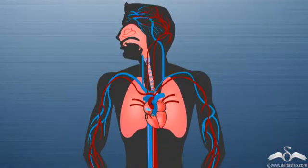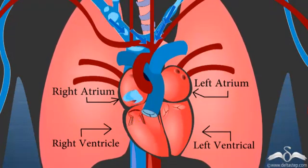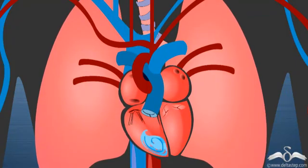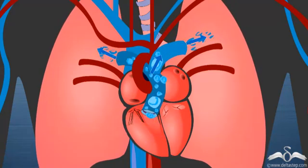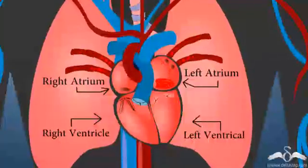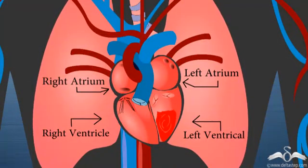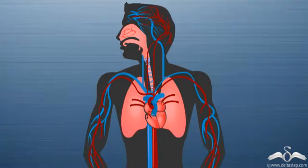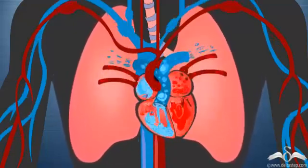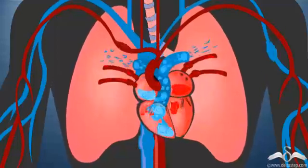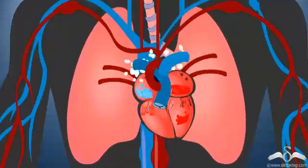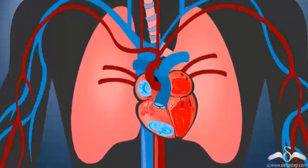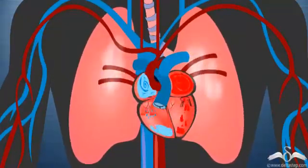Deoxygenated blood comes from the body into the right atrium and from there moves into the right ventricle. From the right ventricle, this deoxygenated blood moves to the lungs. In the lungs, this deoxygenated blood gets oxygenated. The oxygenated blood comes back to the left atrium and then moves to the left ventricle. From the left ventricle, the oxygenated blood is pumped into the body again. This flow of blood caused by atrial contraction followed by relaxation and ventricular contraction followed by relaxation repeats cyclically in the heart or cardium. Thus, this cycle is known as the cardiac cycle.